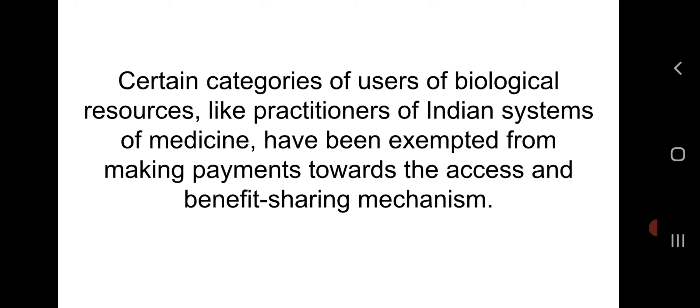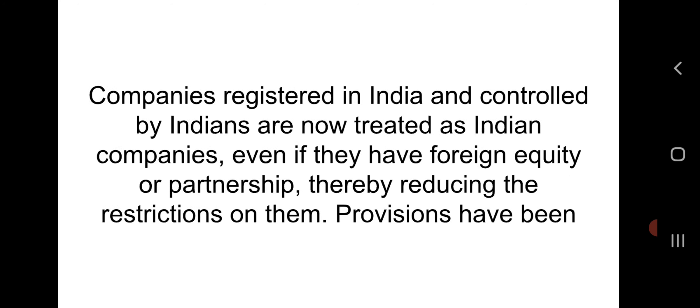Certain categories of users of biological resources, like practitioners of Indian systems of medicine, have been exempted from making payments toward the access and benefit-sharing mechanisms. Companies registered in India and controlled by Indians are now treated as Indian companies even if they have foreign equity or partnership, thereby reducing restrictions on them. Provisions have been included to speed up the approval process in cases of use of biological resources in scientific research or for filing patent applications.